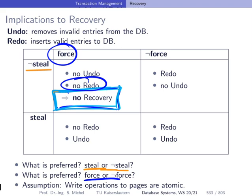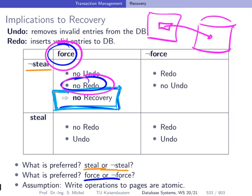Force sounds promising since we don't need redo, but force means that at every commit, one or more pages for that transaction must be written back to disk. Since these pages cannot be assumed to be placed next to each other, we have to pay random I/O — which is expensive. If we use 'not force,' the pages remain in the buffer and can potentially be used by other transactions. This is exactly why we want buffer management in the first place.